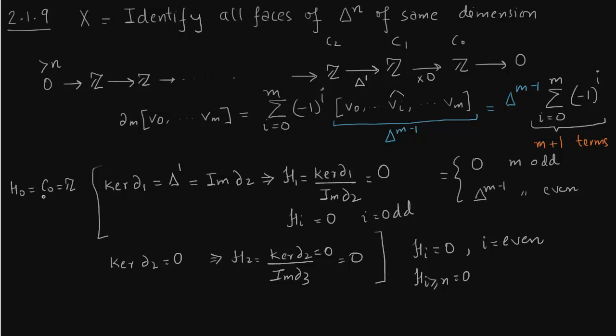So the only thing remaining is H0. C0 over image of delta 1. Now as we see the delta 1 is multiplication by zero map. So you see the only non-trivial map here in this case is just in the zero dimension.